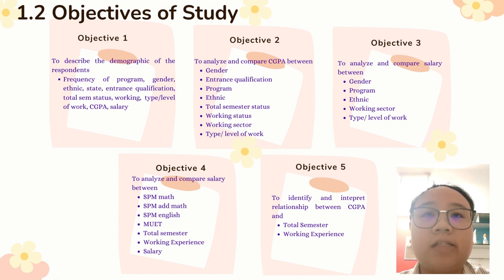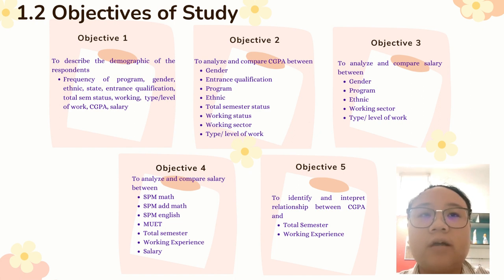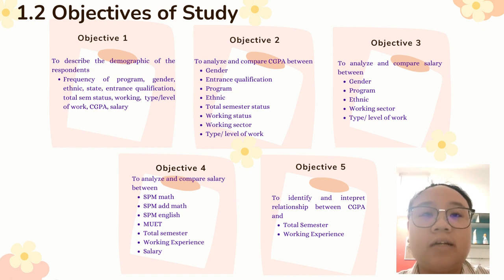The second objective is to analyze and compare CGPA between gender, entrance qualification, program, ethnic, total semester status, working status, working sector, and type or level of work. Objective three is to analyze and compare salary between gender, program, ethnic, working sector, and type or level of work. Objective four is to analyze and compare salary between SPM Maths, SPM MS, SPM English, MUED, total semester, working experience, and salary. While the last objective is to identify and interpret the relationship between CGPA and total semester as well as working experience.